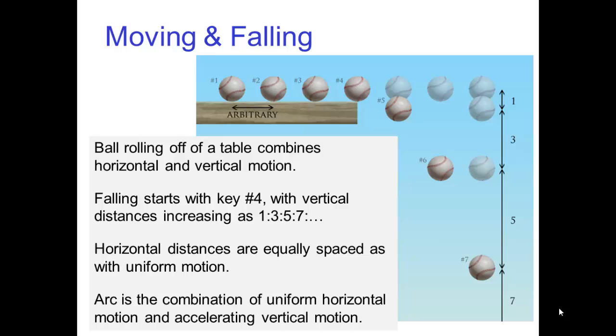Getting back to parabolic arcs, let's look at the path of action for a ball moving in the air. A ball rolling off of a table combines horizontal and vertical motion. In this example, falling starts with key number four, with vertical distances increasing as one to three to five to seven, that is, by the odd rule. Horizontal distances are equally spaced as with uniform motion. The resulting path of action is an arc that combines uniform horizontal motion with accelerating vertical motion.